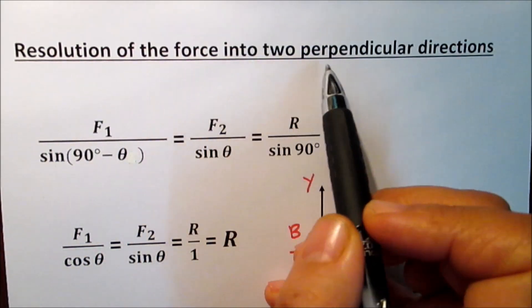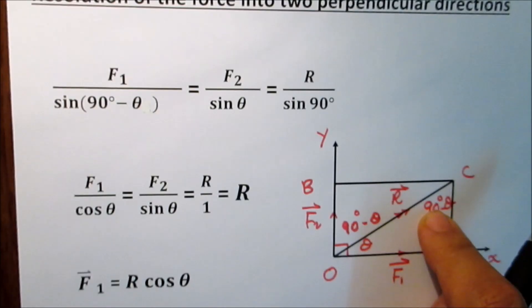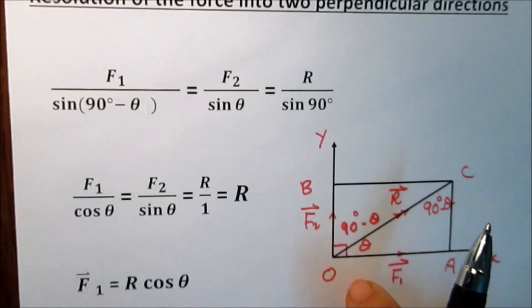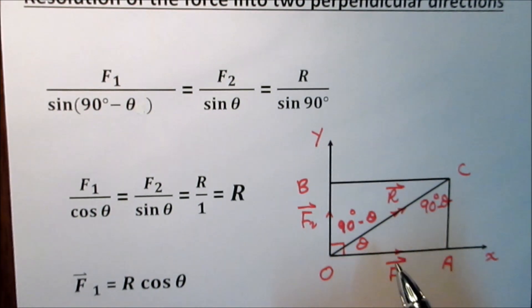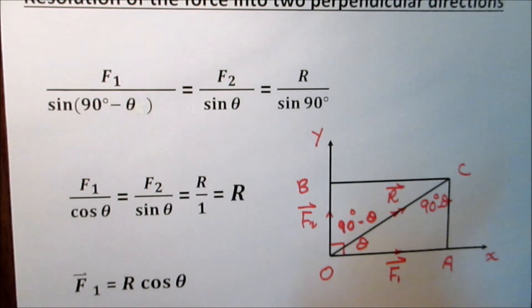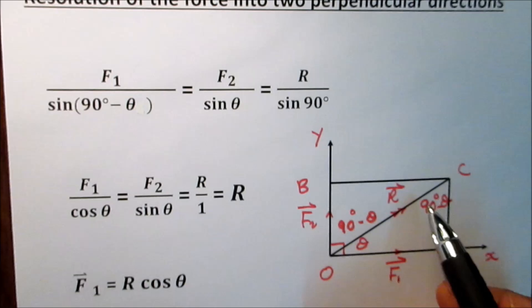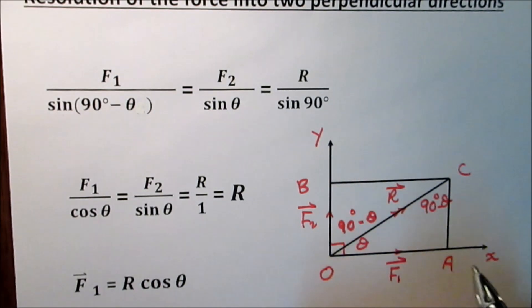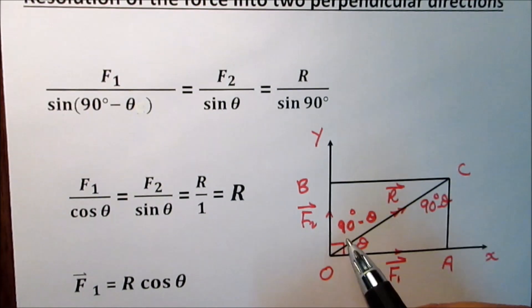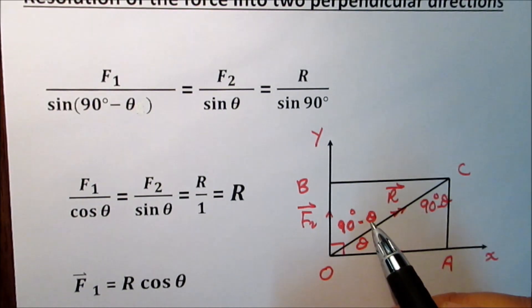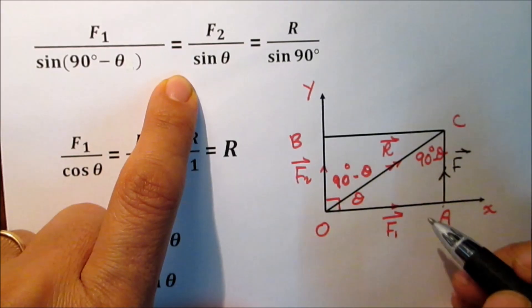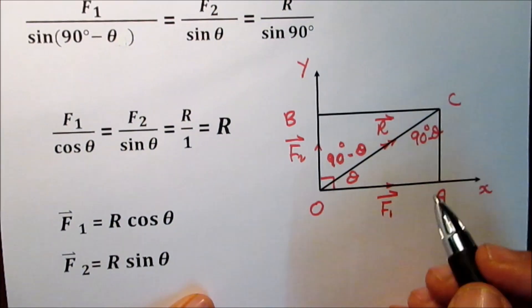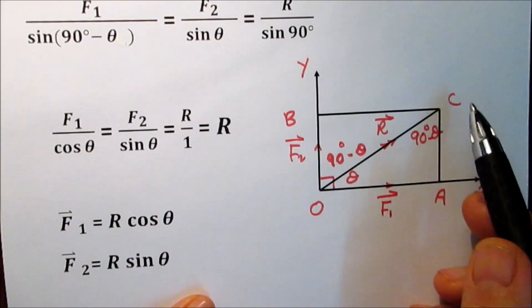The resolution of the force into two perpendicular directions. Force R acts at point O and we want to resolve it into two perpendicular forces F1 and F2 such that F1 inclines by an angle theta with the direction of R. In this case the parallelogram becomes a rectangle. F2 inclines on the direction of R by 90 minus theta. AC represents F2 in magnitude and direction. Applying the sine rule on triangle OAC.